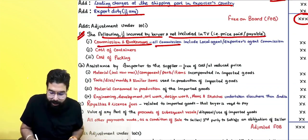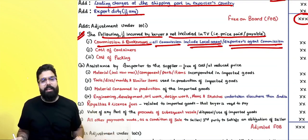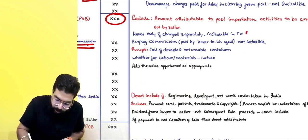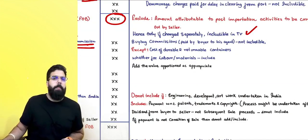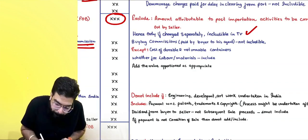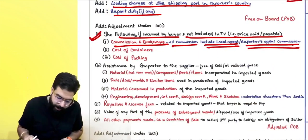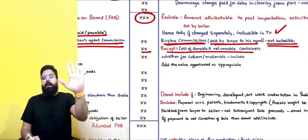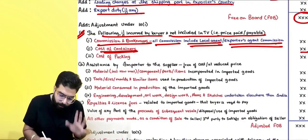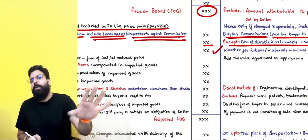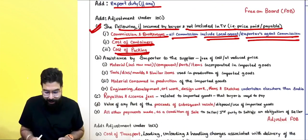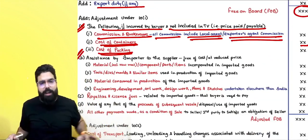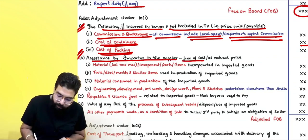In detail for Rule 10(1)(a): add commission and brokerage — including local agent or exporter's agent in India — but not buying commission paid by the buyer to his own agent. Add cost of container, except durable and returnable containers. Always add cost of packing, whether for labor or material.